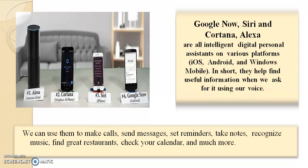Here are some very well-known examples of artificial intelligence. These are the intelligent digital personal assistants on various platforms, like Alexa on Amazon Echo, Cortana on Windows Phone, Siri on iPhones, and Google Now on Android phones. These personal assistants can be used to make calls, send messages, set reminders, take notes, recognize music, and find restaurants. These are the personal assistants that we use in our day-to-day life.